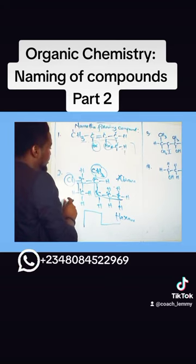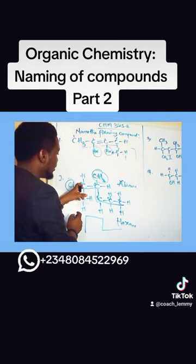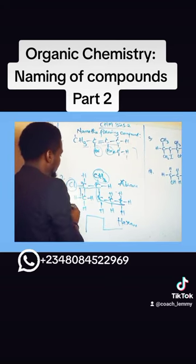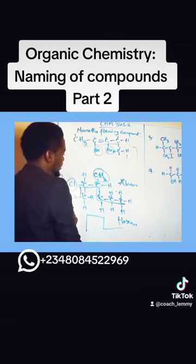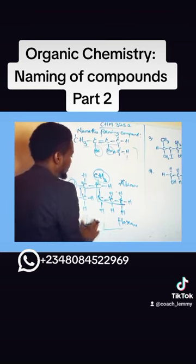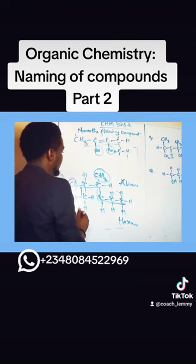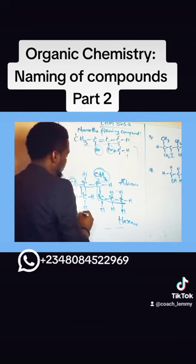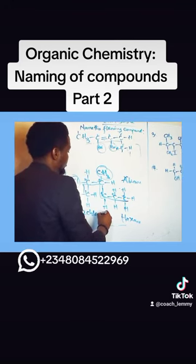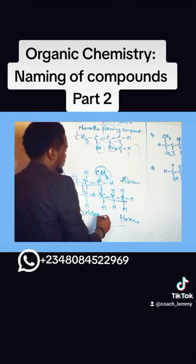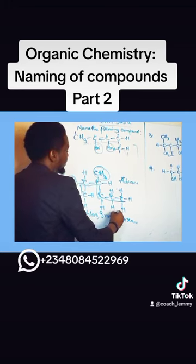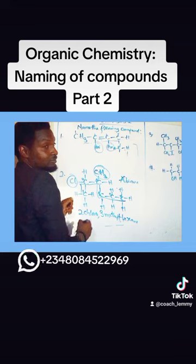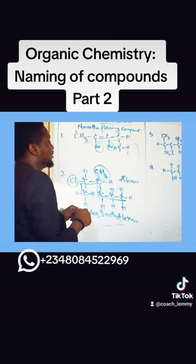So what do we call it now? At the second carbon atom we have chlorine. At the third we have — so we say: 2-fluoro, 3-bromo. Is it simple, right?